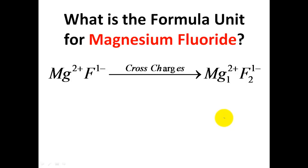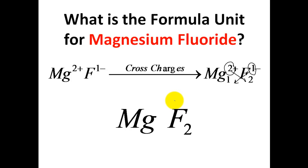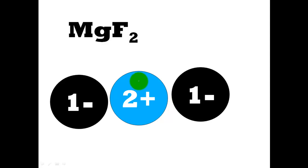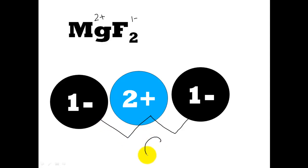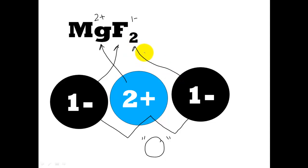To be more clear: the charges are 2-plus and 1-minus, and you cross them. The 2 goes over to fluorine, the 1 goes to magnesium, giving MgF₂. This represents one 2-plus magnesium ion and two 1-minus fluoride ions. Adding them up: negative 1 plus positive 2 plus negative 1 equals 0. Ionic compounds will always have a final charge of 0. You could also get the same answer of MgF₂ using the Lewis dot structure.